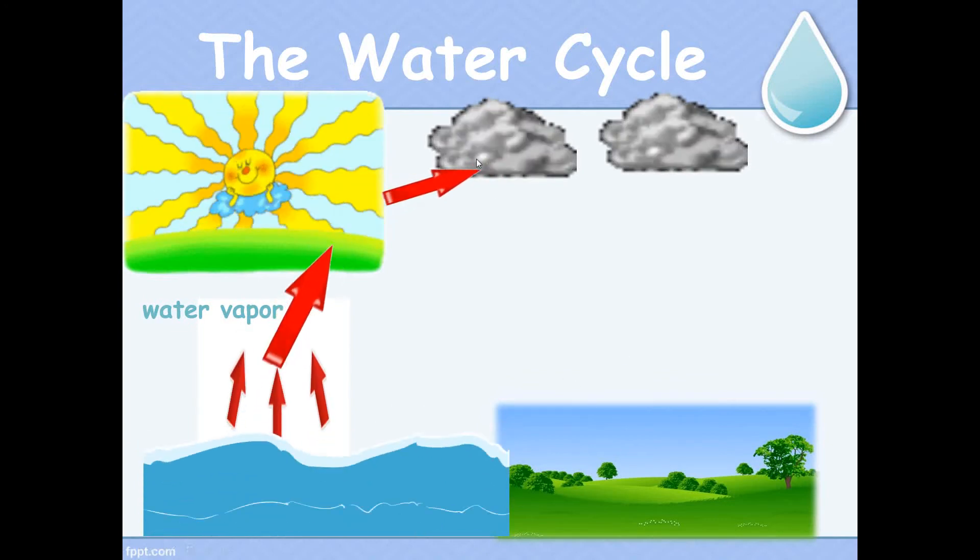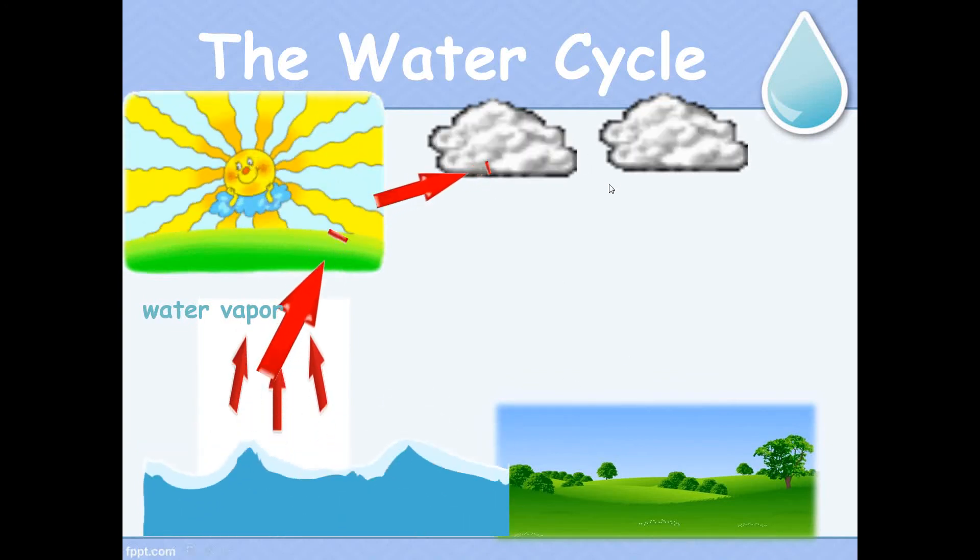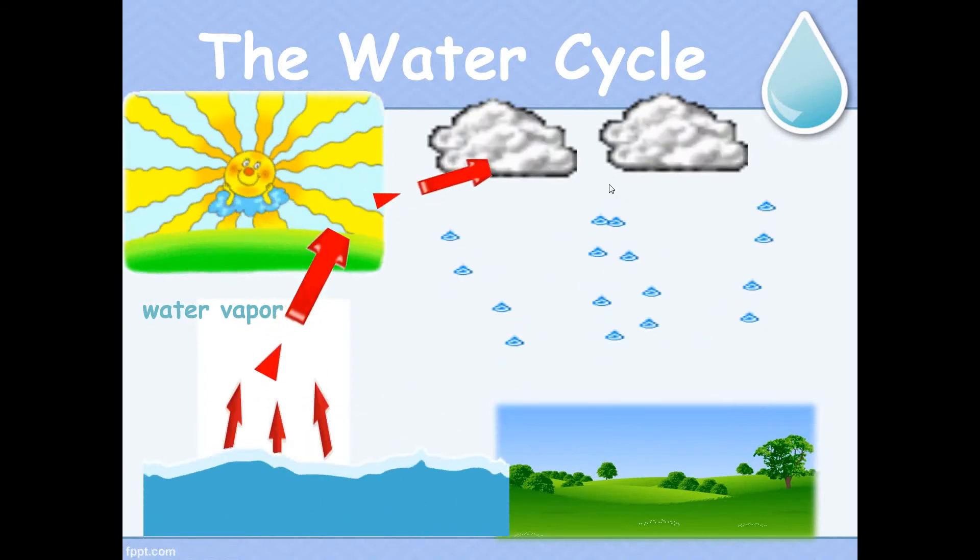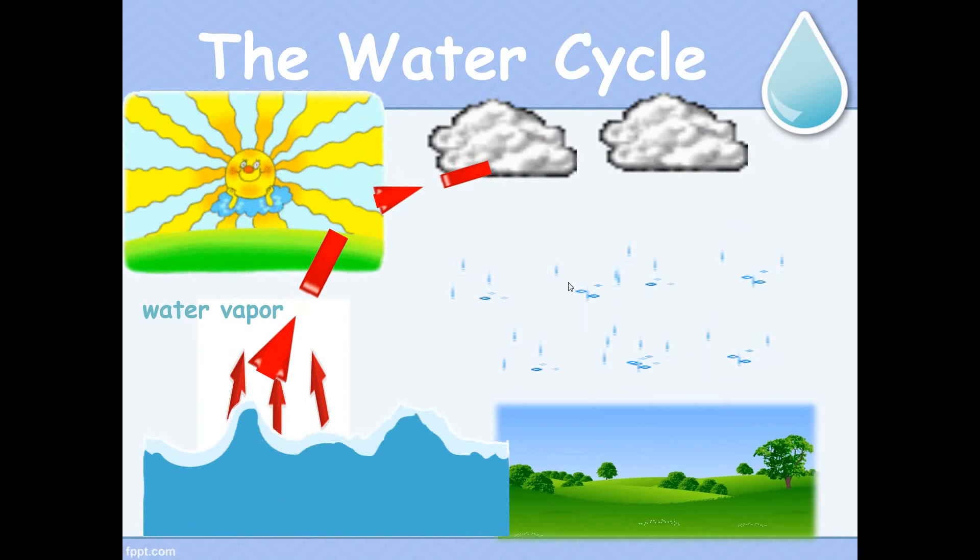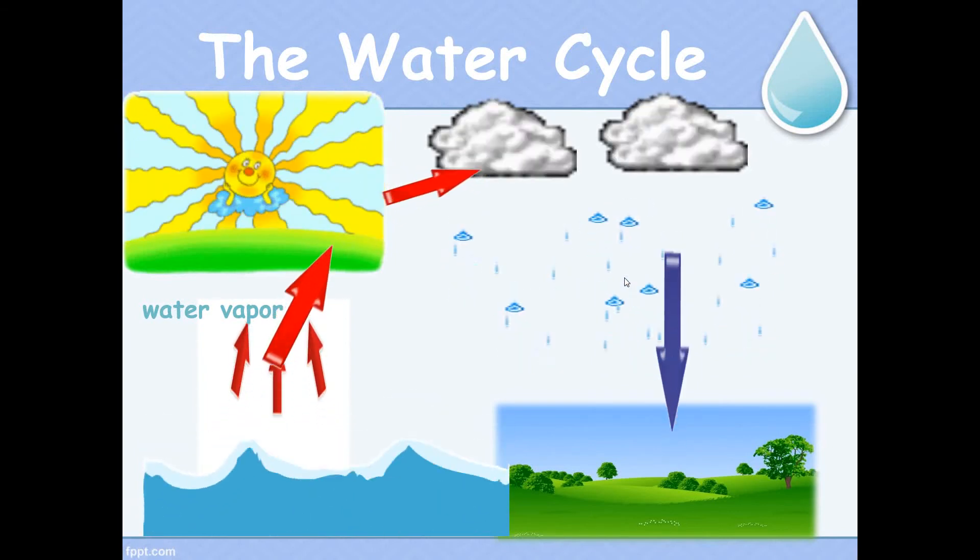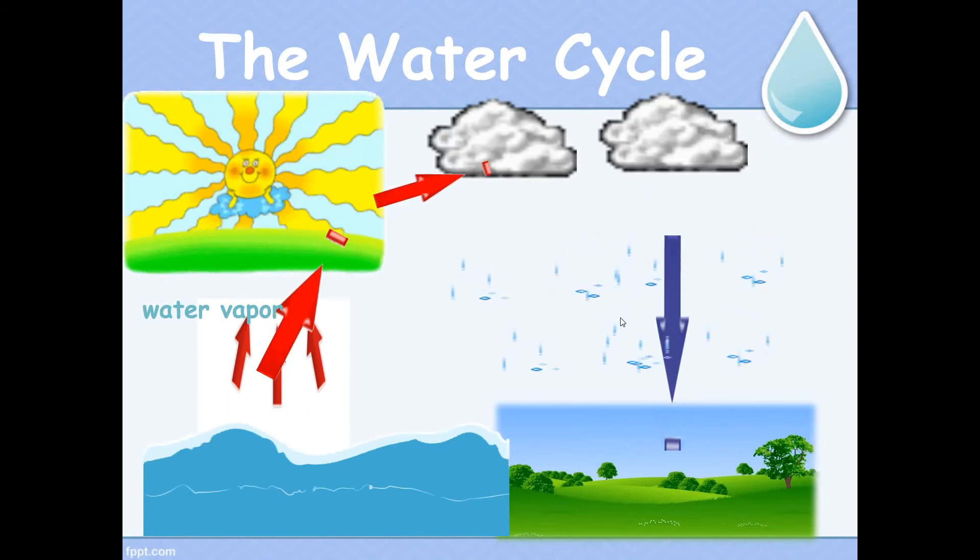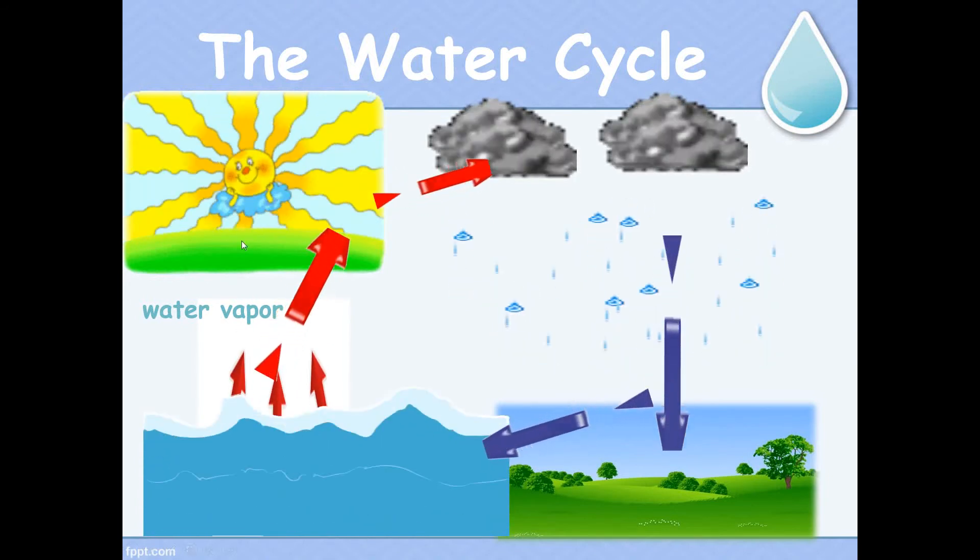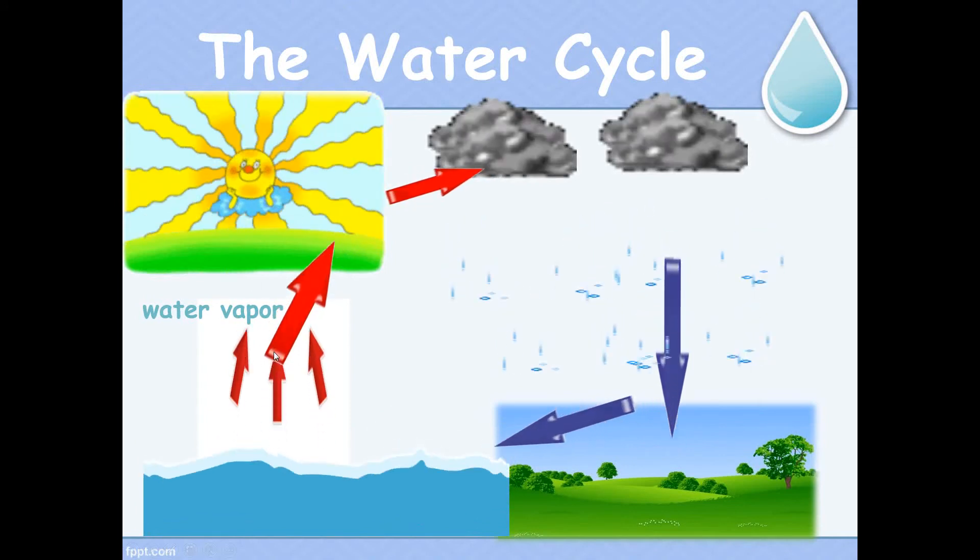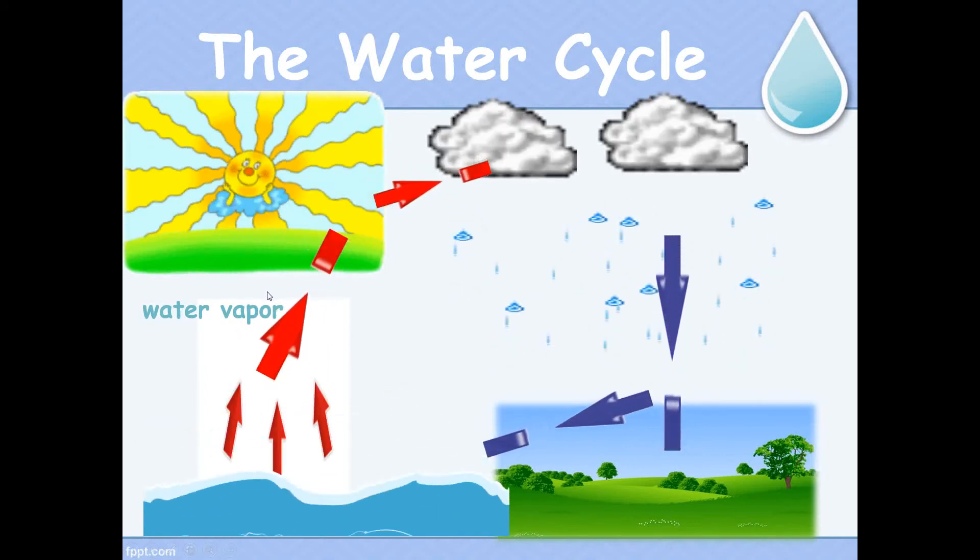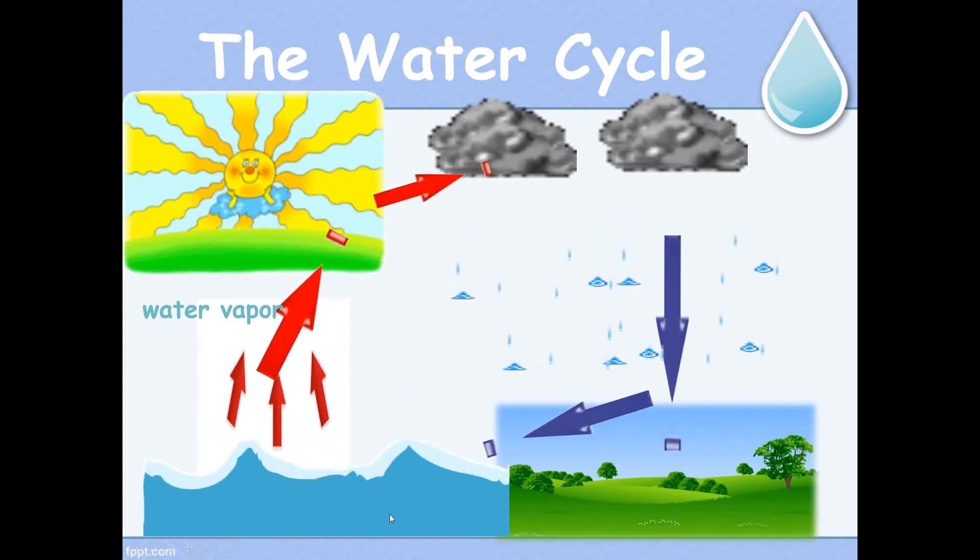Now the water drops get bigger and colder and they can fall to earth as rain or snow. Some of the rain falls back into land or back into the water. The sun heats the water again and the water vapor goes up into the air again and then the cycle begins again.